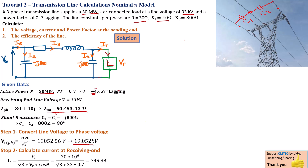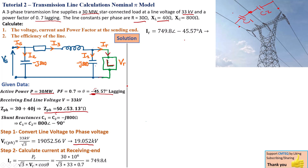Using the power formula, IR equals PR divided by the square root of 3 times VR times cos theta. With PR equal to 30 megawatt, the magnitude of the current at the receiving end is 749.8 amperes. Since the load has a power factor of 0.7 lagging, the angle between voltage and current is negative 45.57 degrees, so our current is 749.8 at an angle of negative 45.57 degrees.